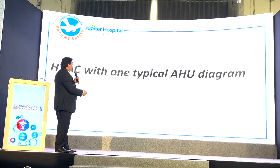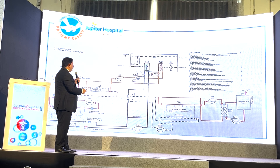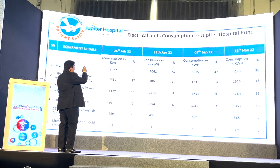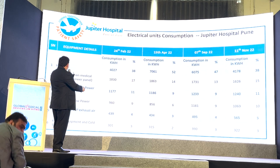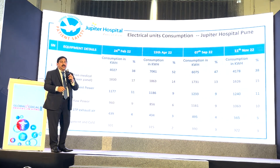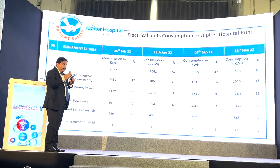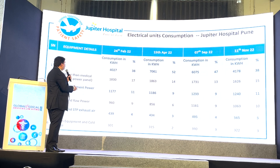This is our cooling tower performance. And the electrical unit consumption — you can see what we have done in February, April, September, and November. For HVAC, in Thane it was somewhere around 8,000 to 9,000 units. Now it has come down to 4,026 and 4,178. If you were talking about 54% or more savings there, here only in April it was 52%, otherwise it is 38%, 47%, 38%. These are the readings taken for cooling.